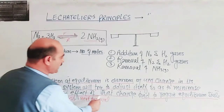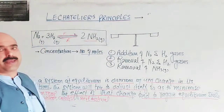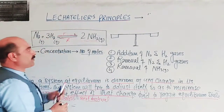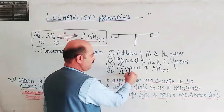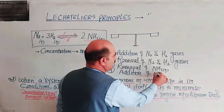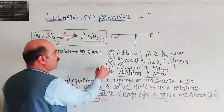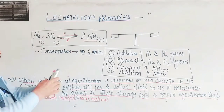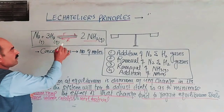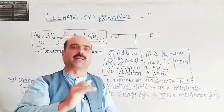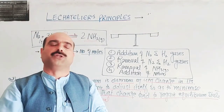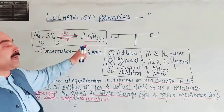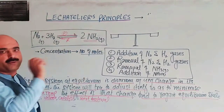The system tries to minimize the effect of the change. In the example of addition of ammonia, the system responds to reach a new equilibrium state. It is clear that the system has tried to minimize the effect of the change and to regain the equilibrium state.